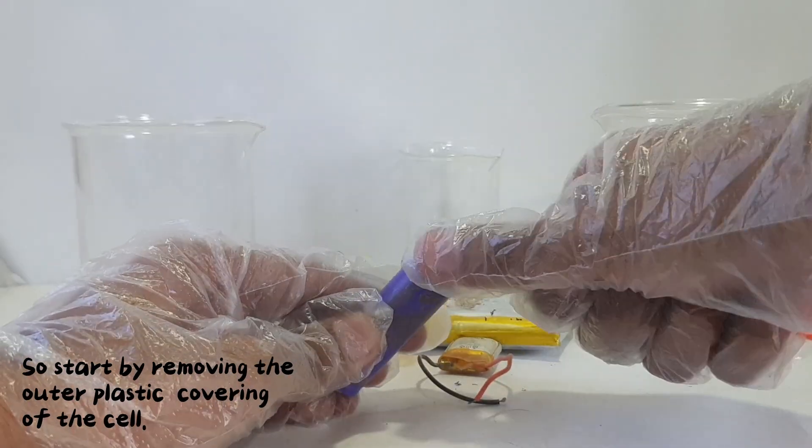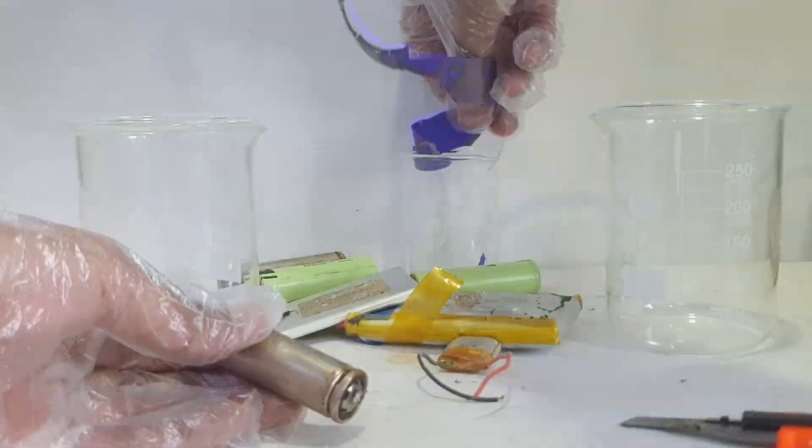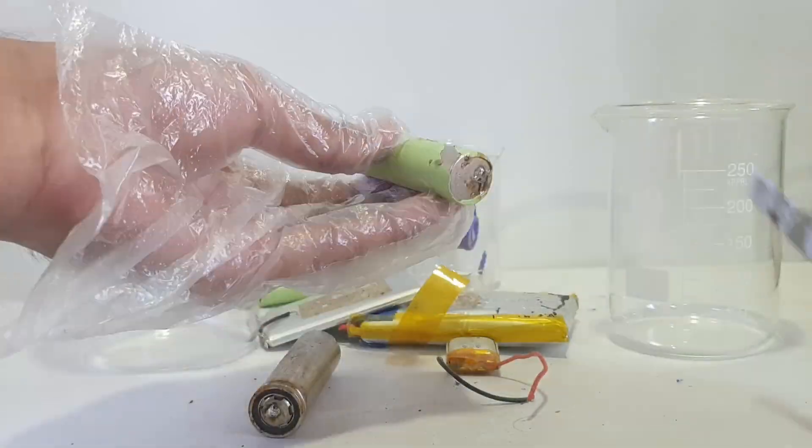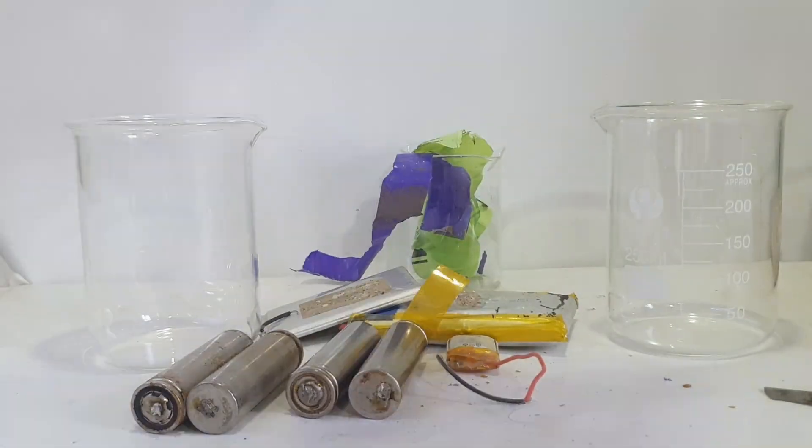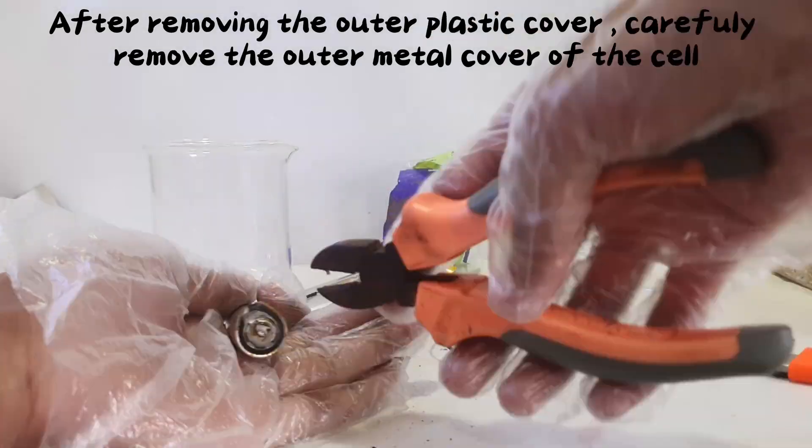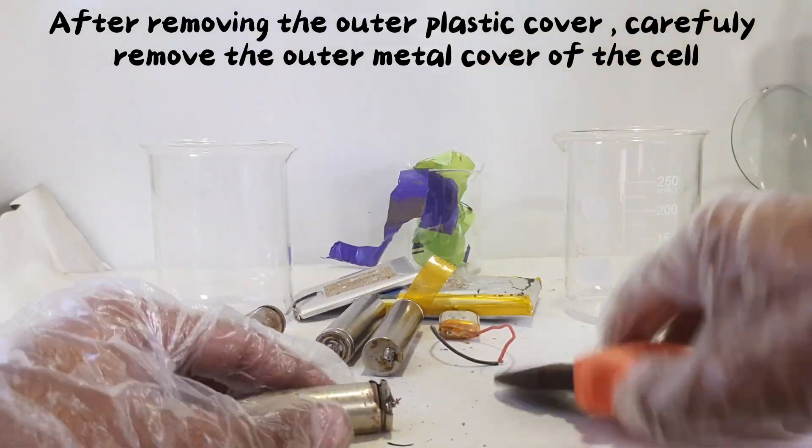Start by removing the outer plastic covering of the cell. After removing the outer plastic cover, carefully remove the outer metal cover of the cell.